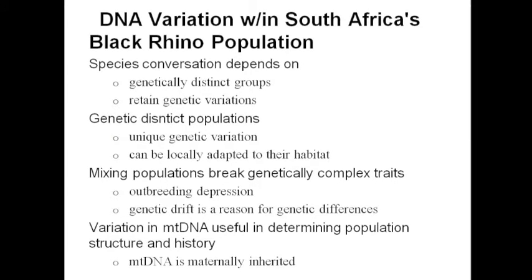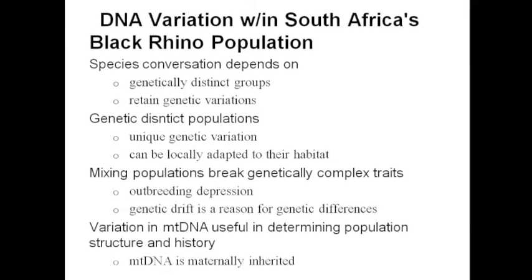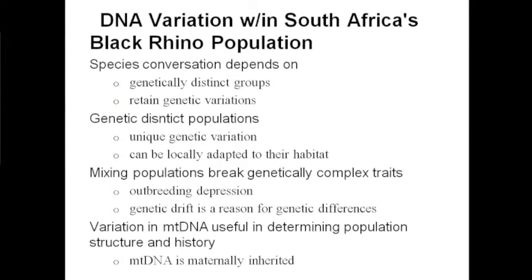This can lead to outbreeding depression, where offspring from crosses between individuals from different populations result in lower fitness than crosses between individuals from the same population. This can also be caused by genetic drift, which is the process of change in the genetic composition of a population due to random events rather than natural selection.